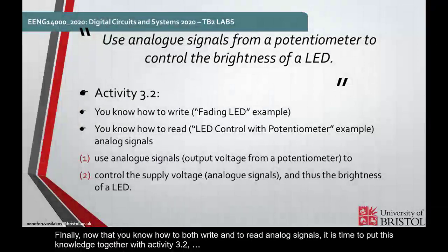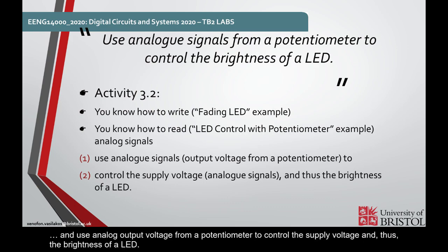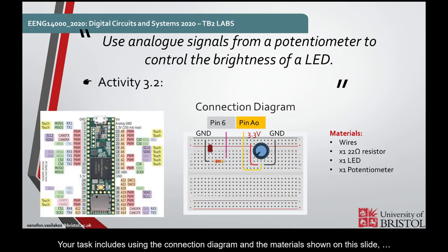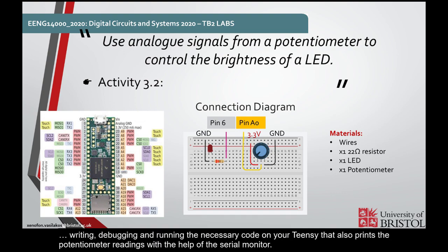Finally, now that you know how to write and to read analog signals, it is time to put this knowledge together with activity 3.2 and use analog output voltage from a potentiometer to control the supply voltage and thus the brightness of a LED. Your task includes using the connection diagram and the materials shown on this slide, writing, debugging and running the necessary code on your Teensy. It also prints the potentiometer readings with the help of the serial monitor.